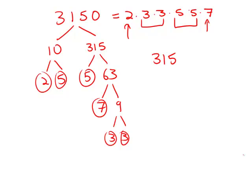And so if 3150 times y is a perfect square, it means that y must be supplying that extra factor of 2 and that extra factor of 7. And of course 2 times 7 is 14, and this is answer choice E.